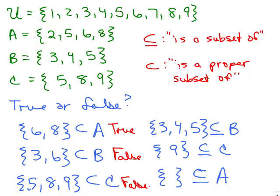If it's exactly the same, to make it true, you would have to have that line under here. Without the line it's false. All right, {3, 4, 5}, is that a subset of B? It's actually equal to B, so the answer is going to be true. How about the set with the number 9 in it? Is that a subset of C? Yes, because 9 is in there.